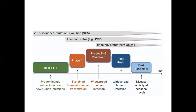Since the world is currently going through a pandemic, you should know how it progresses. From phase 1 to 3, it is predominantly animal infection with very few human infections. In phase 4, there is sustained human-to-human transmission. In phases 5 to 6, it is a pandemic with widespread human infection. After that, there is a post-peak phase with widespread human infection, followed by a post-pandemic state with disease activity at seasonal levels. Currently, the world is in the post-peak phase of coronavirus infection.